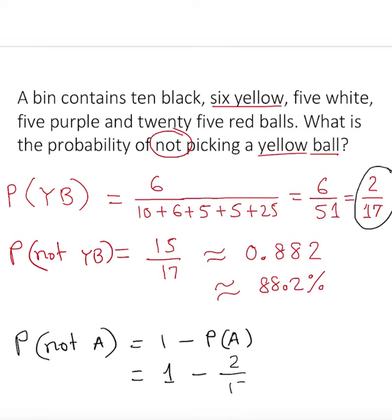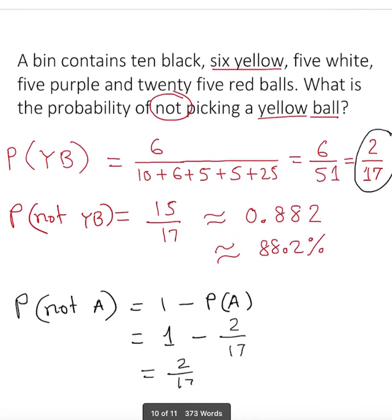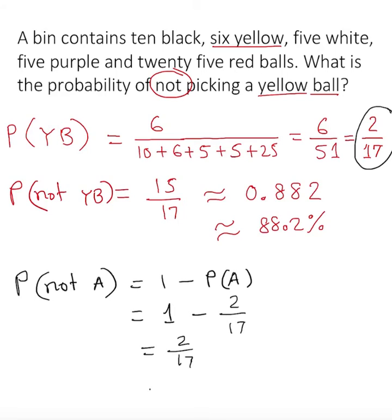And you use any basic calculator. It should give you the decimal. If it is going to be two out of seventeen, obviously this is going to be approximately zero point eight eight two, which is eighty-eight point two percent. So there are many ways.